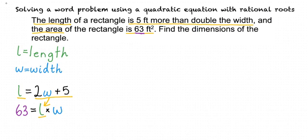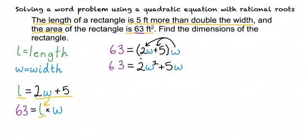We certainly can. That's a great idea. Now we have a new equation that looks something like this. 63 equals 2W plus 5, which is L, times W. If we distribute this W, then we see that 63 equals 2W squared plus 5W.